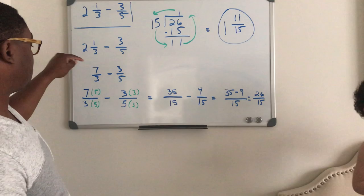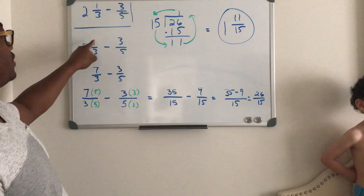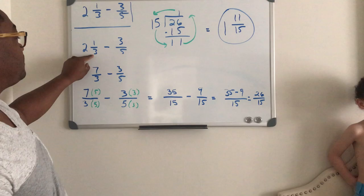So to get from here to here, you multiply the whole number times the denominator, and then you add the numerator. Whole number times denominator, and then you add the numerator. I'll repeat it one more time: whole number times denominator plus the numerator.